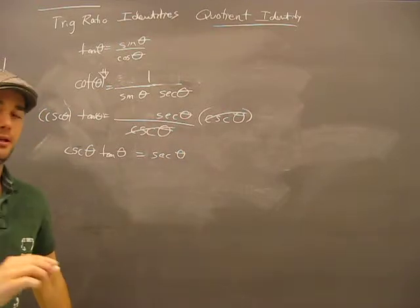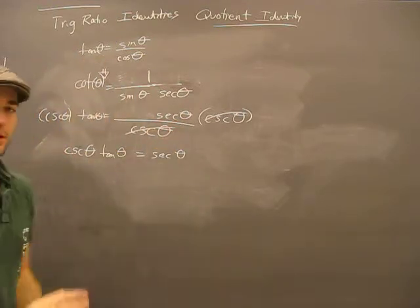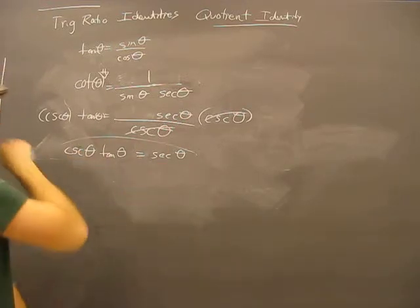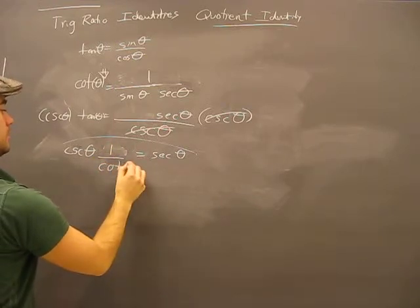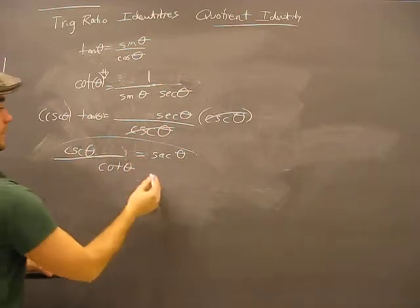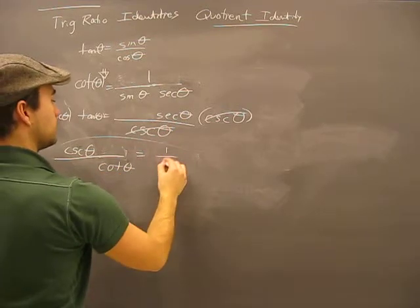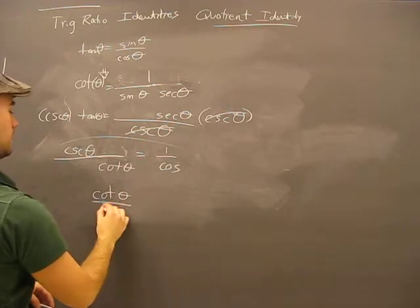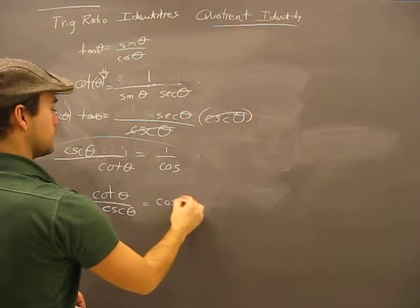You see where I'm going with this? All I did was do it one side to the other here. All I did was flip it, replace things with other things. I could say, I could write one over cotangent. So I really have cosecant theta over cotangent theta equals secant theta. I could change this back to one over cosine. And then say, I flip it, and then I have cotangent theta over cosecant theta equals cosine theta.